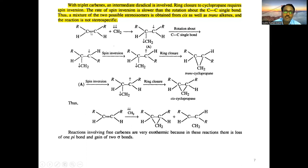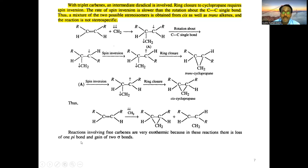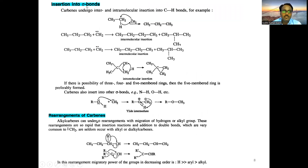In addition to the carbon-carbon double bond, rotation about the C-C single bond plays a crucial role in determining the geometry of the product, giving two possible stereoisomers — cis and trans. The reactions involving carbenes are very exothermic because there is a loss of one pi bond and gain of two sigma bonds. Carbenes can also undergo insertion reactions — for example, ethane undergoes insertion with methylene carbene and the chain extends to give propane. This chain extension can occur at branches or terminal positions.